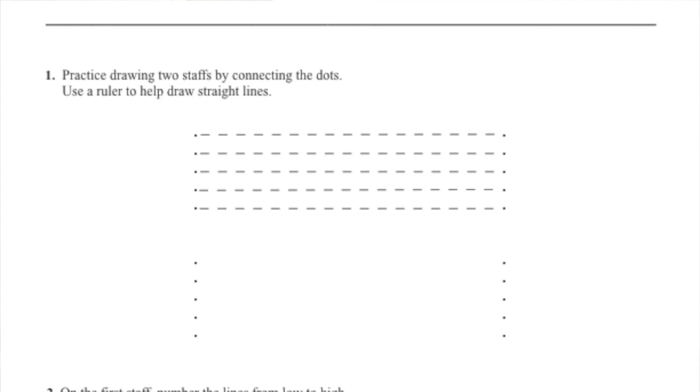For number one, just practice drawing two staffs by connecting the dots. For number two, on the first staff that you drew, number the lines from low to high, starting from the bottom line to the top line.